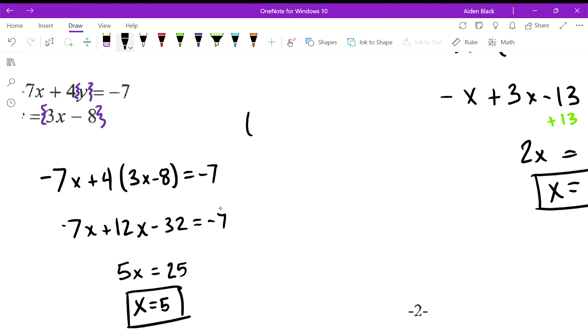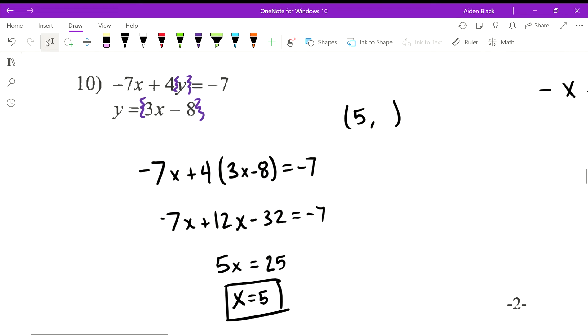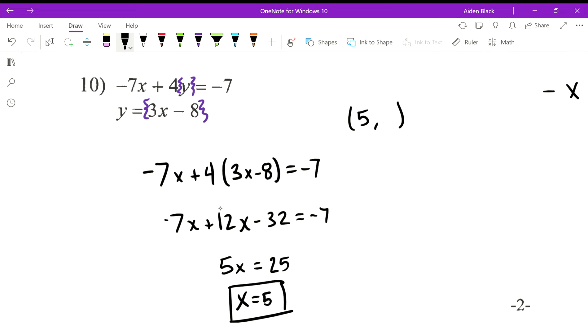So our solution is going to be 5 comma what's our y value. To get our y value, we can just plug in 5 for x, and it would probably be easiest to put it into this equation. So we get y is equal to 3 times 5 minus 8, which gives us y is equal to 15 minus 8, which would give us 7.